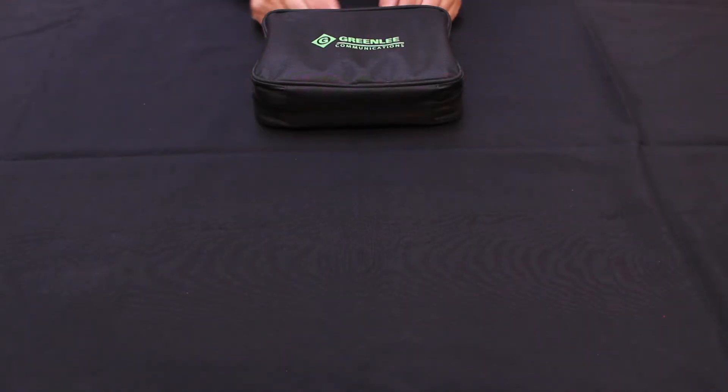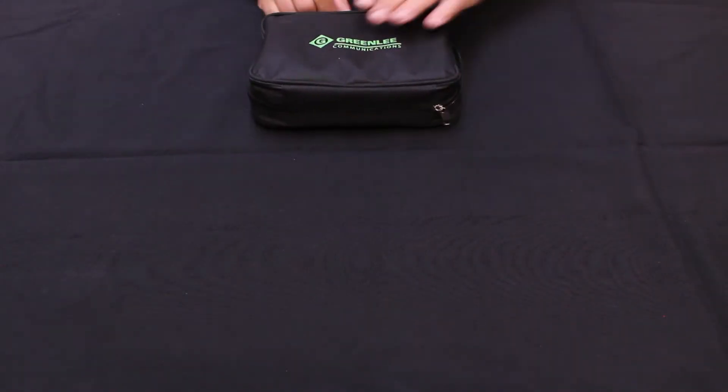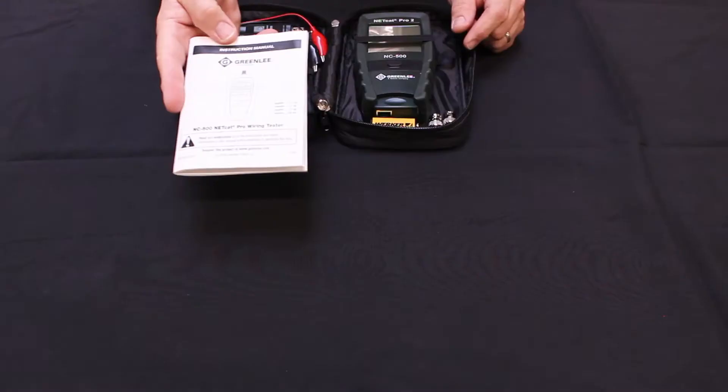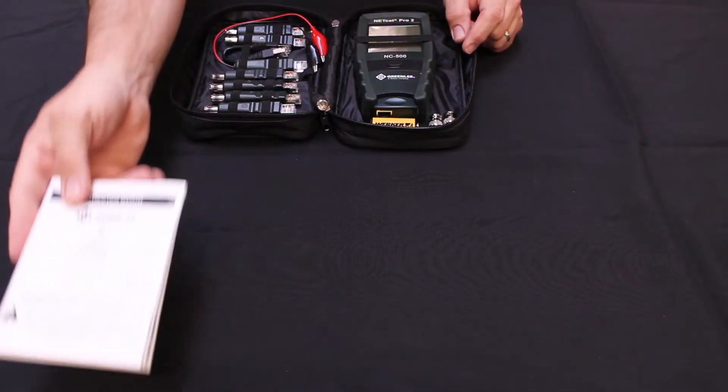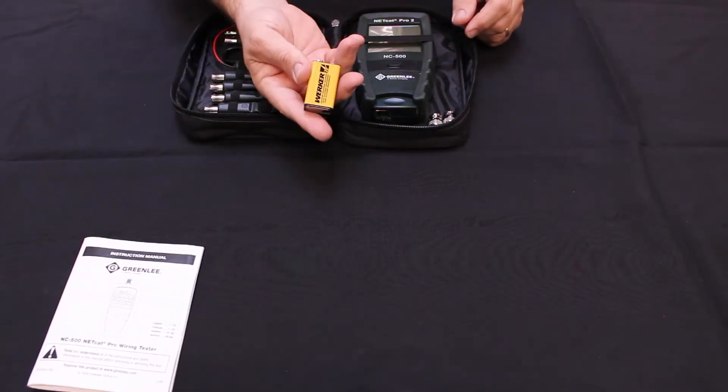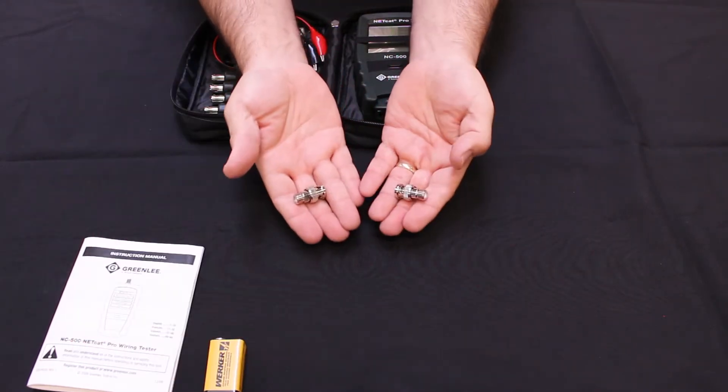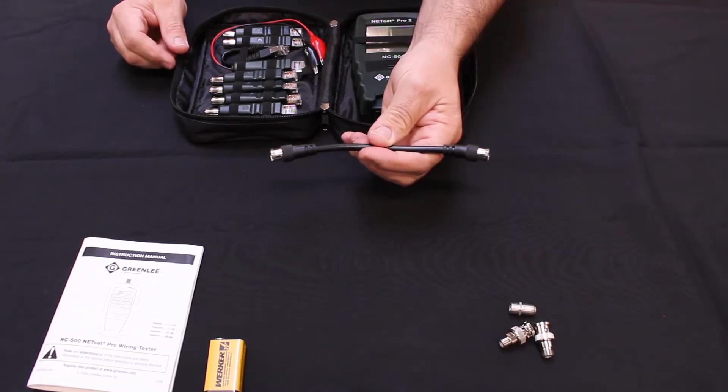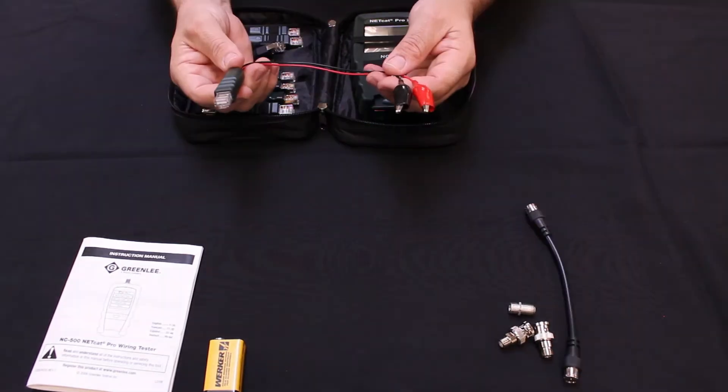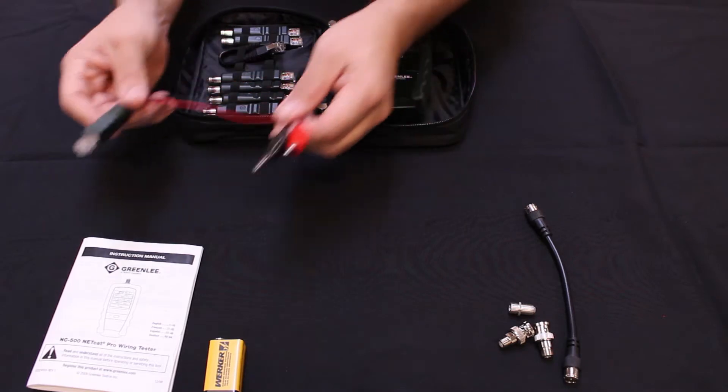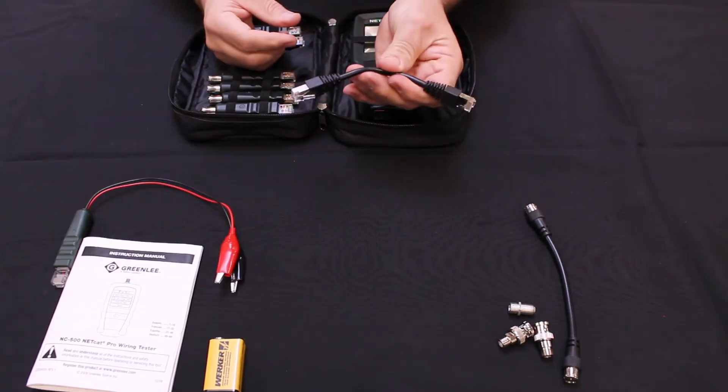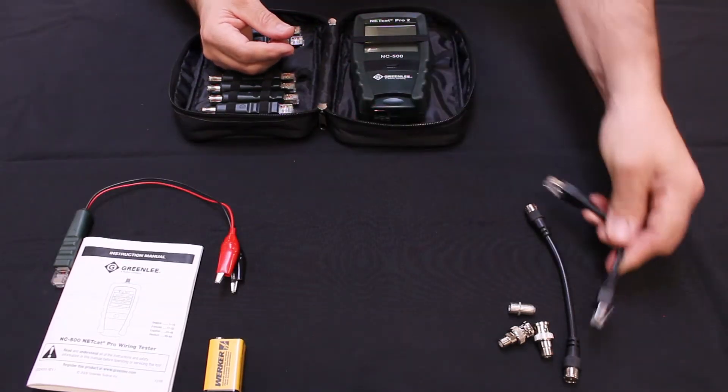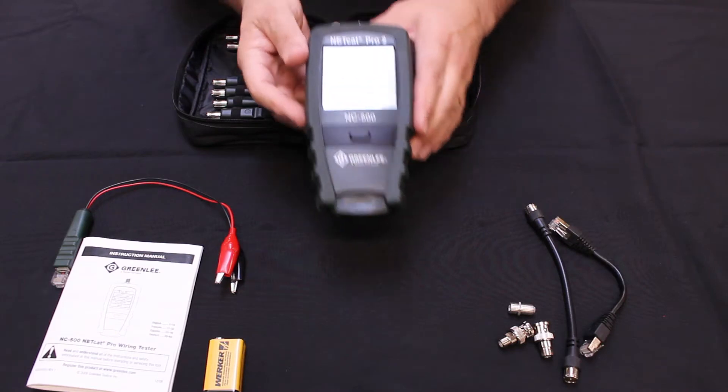Let's take a look at the contents of the NC520 kit: NC500 instruction manual, a 9-volt battery, two F to BNC adapters, an F to F barrel adapter, male F to male F patch cable, and an RJ45 to alligator clip adapter.